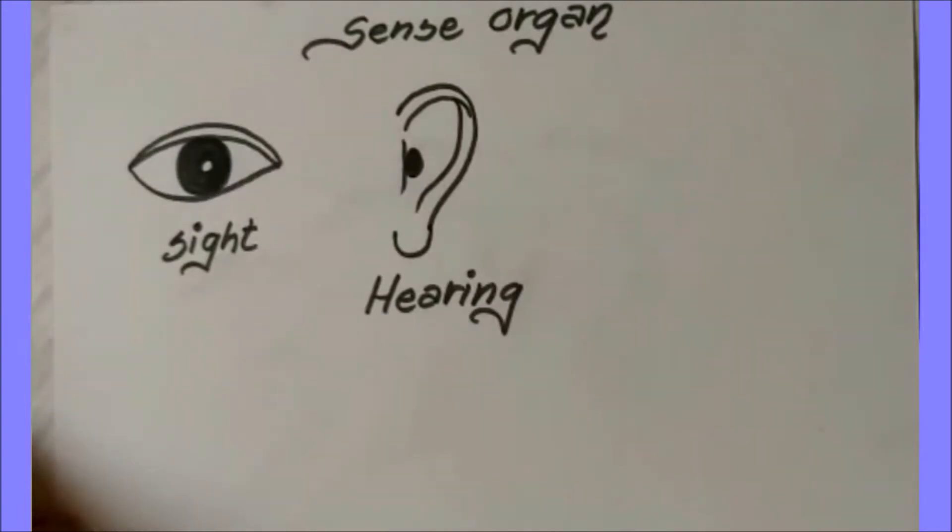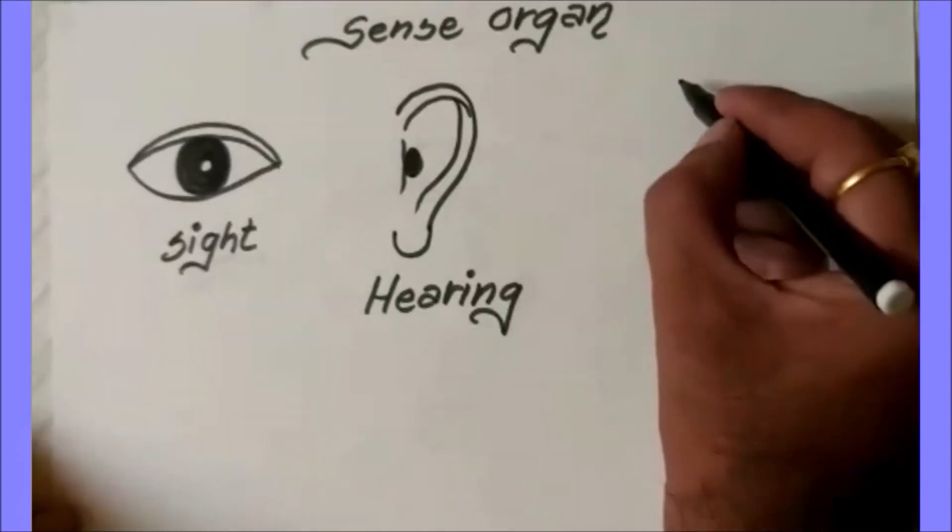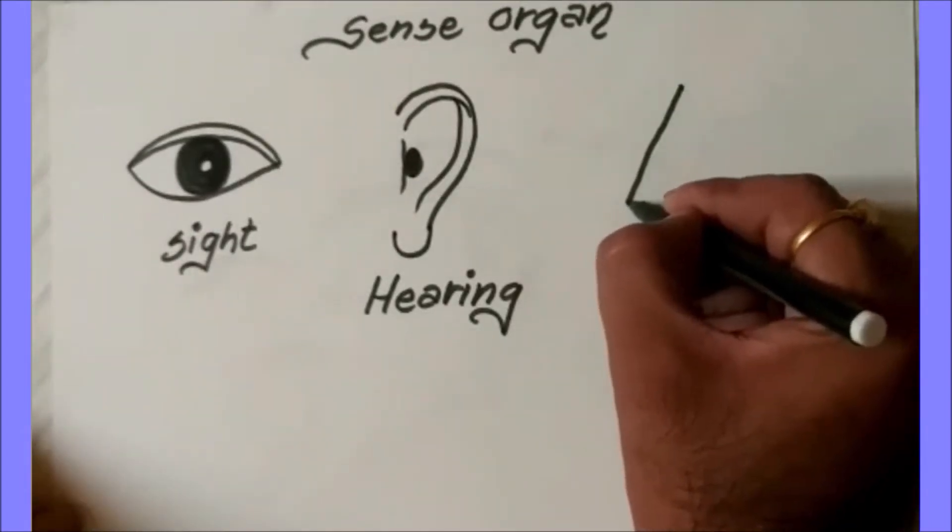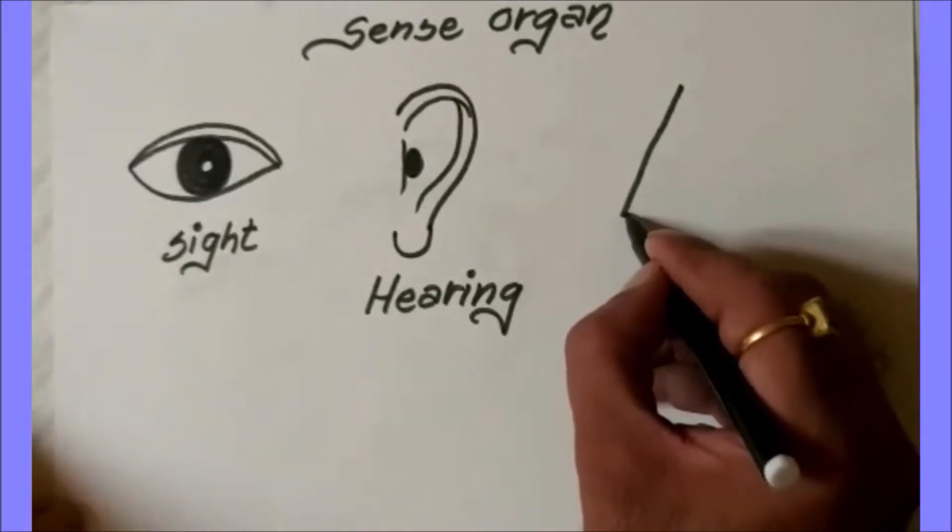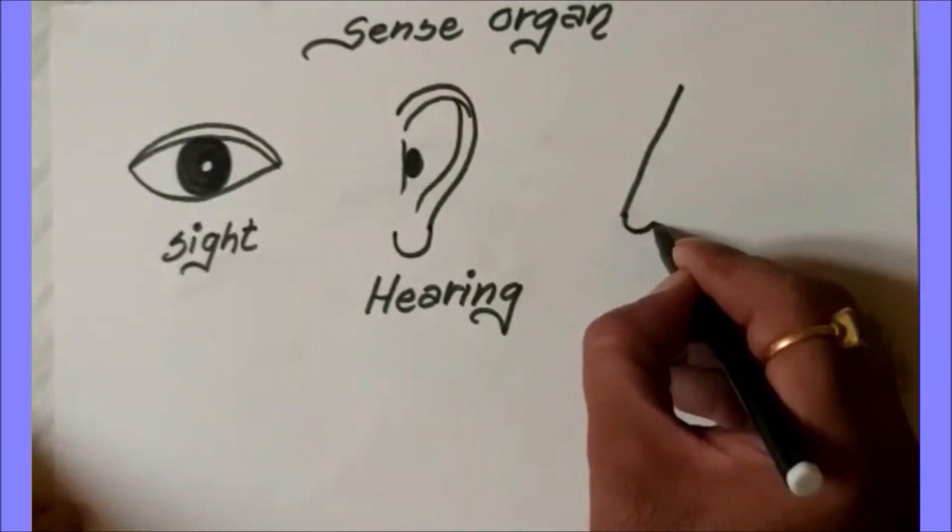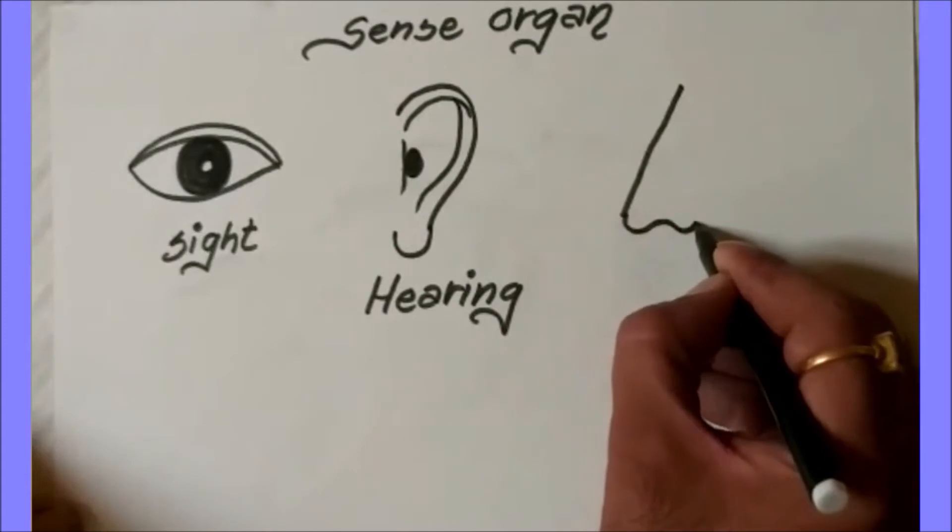Now the third, that is the nose which gives a sense of smelling. One slanting line, one slanting line, one slanting line, one curl line and a few lines inside.